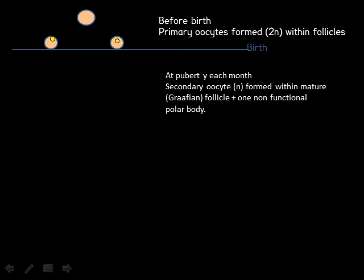But it divides unevenly to produce one large secondary oocyte and a very small non-functional cell called a polar body.